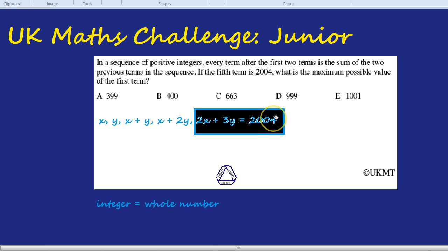We want the maximum possible value of the first term. We want X to be as big as possible. So ideally X could be like a million, but obviously it has to add up to 2004, and they're both positive, so that can't work.